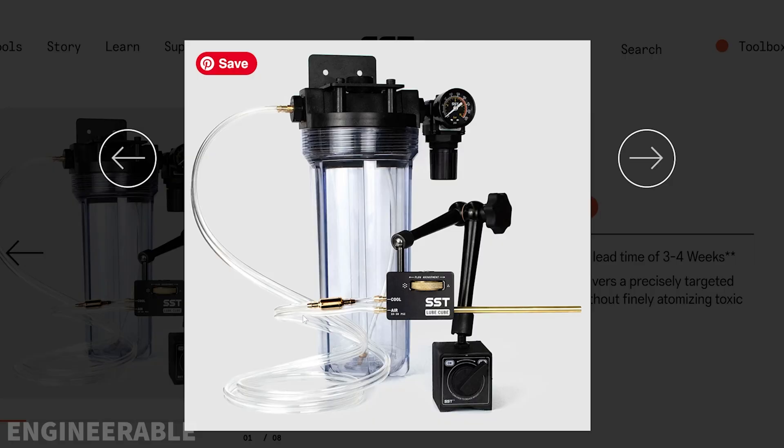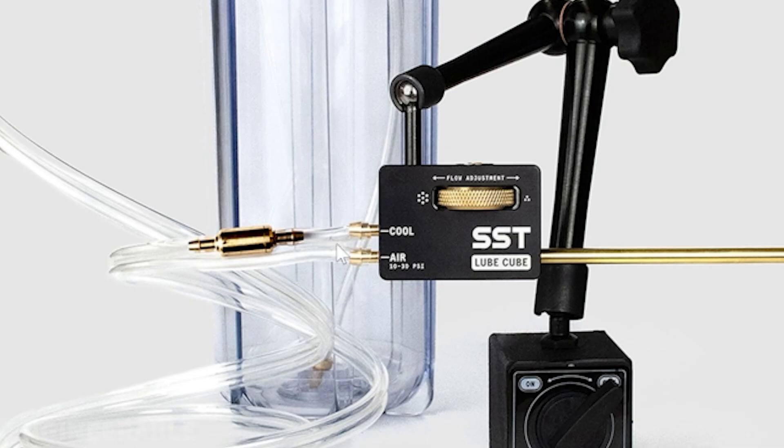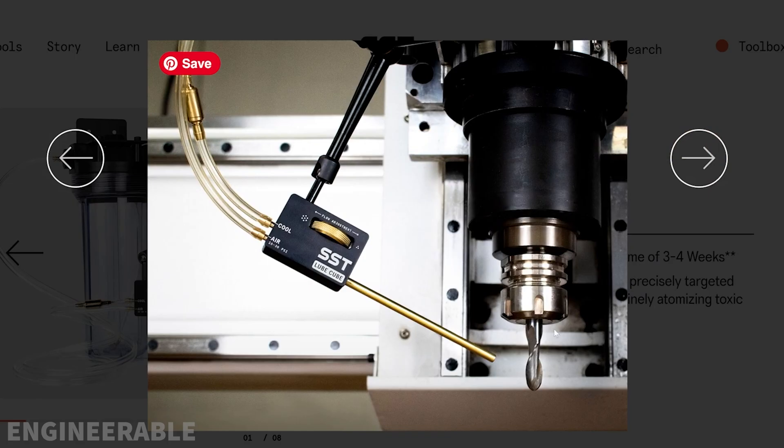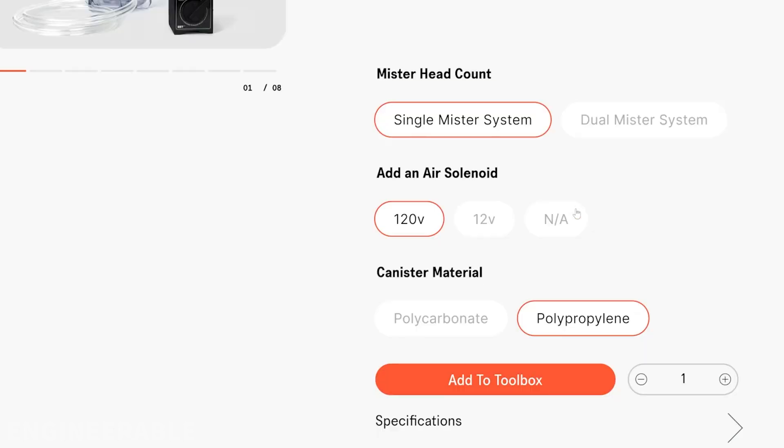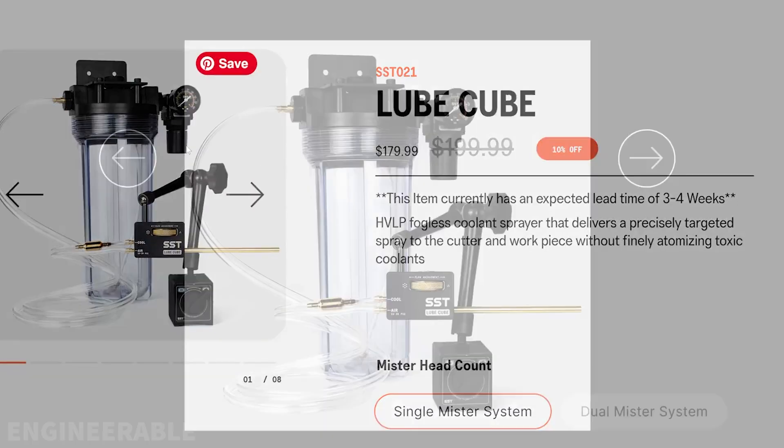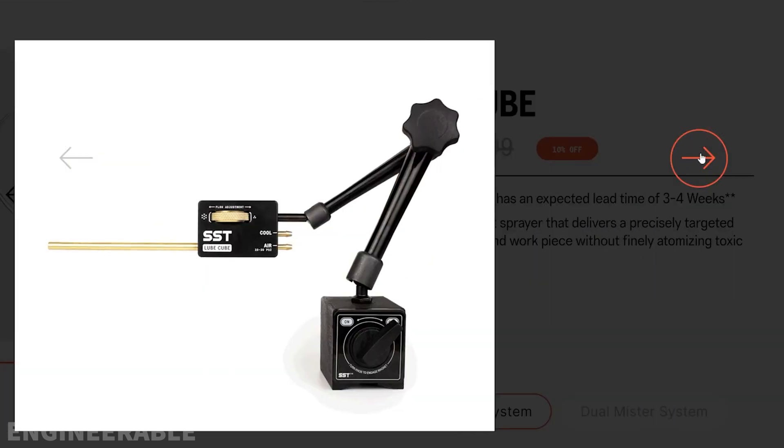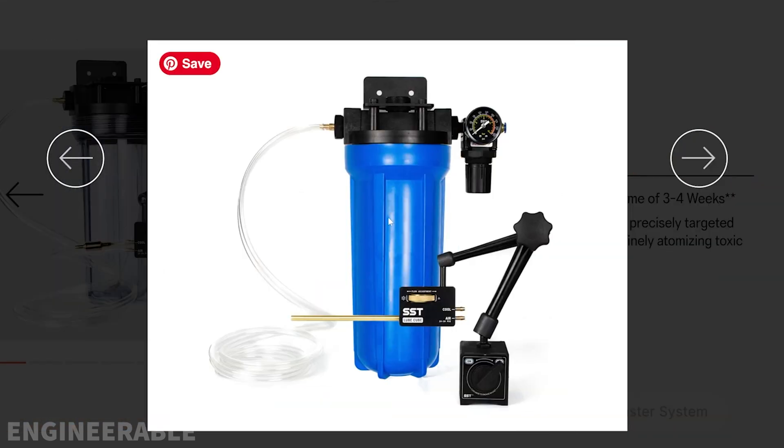So I did notice that SST now includes a check valve to prevent that backflow. So if you buy a SST lube cube now you're going to get a check valve with it. Here it is shown again on the machine. SST now also offers a polypropylene container instead of the polycarbonate container, which is non-transparent so you won't be able to see the level inside. But this is more resistant to chemicals like alcohol, so it shouldn't explode if you use alcohol.